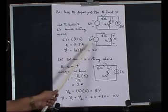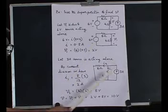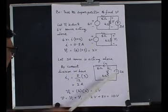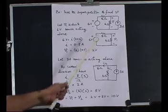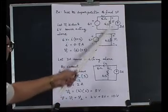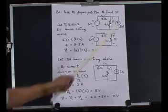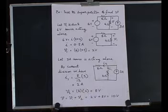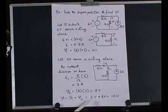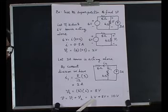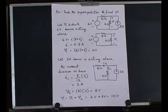4 ohms multiplied by 2 amperes gives us 8 volts. So the response due to the 6 volts source is 2 volts, and the response due to the 3 amperes source is 8 volts. The net voltage, which is the algebraic sum V = V1 + V2, equals 2 volts plus 8 volts, which is 10 volts.